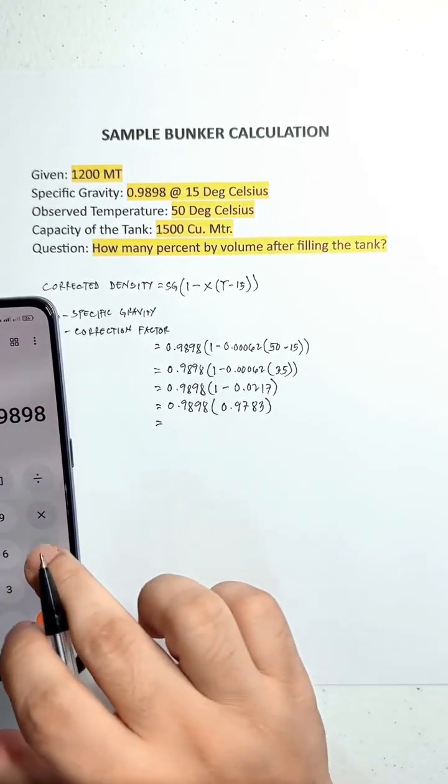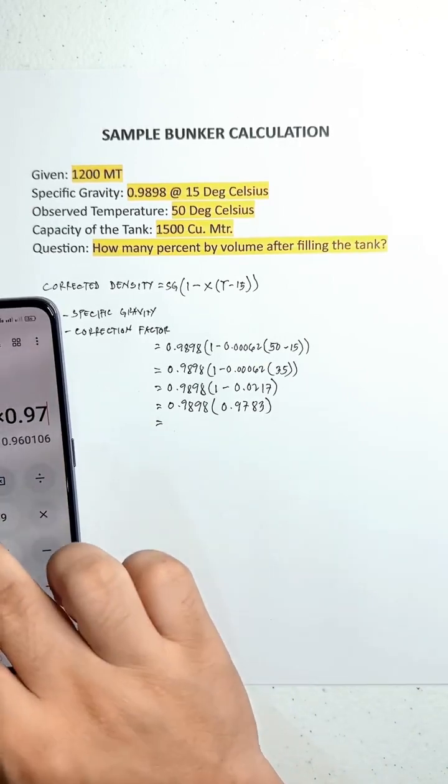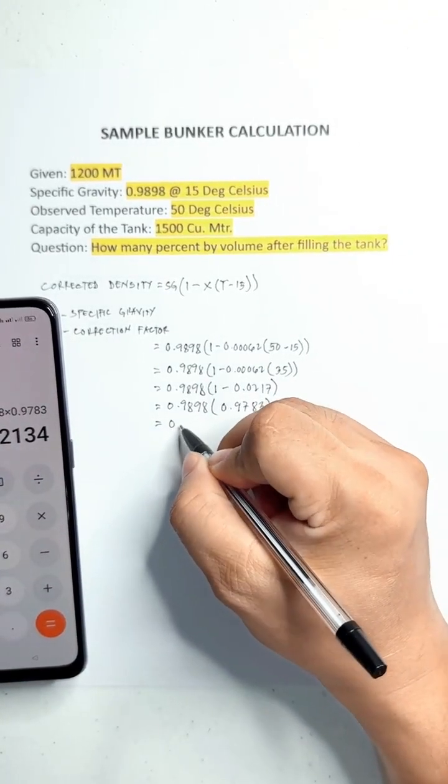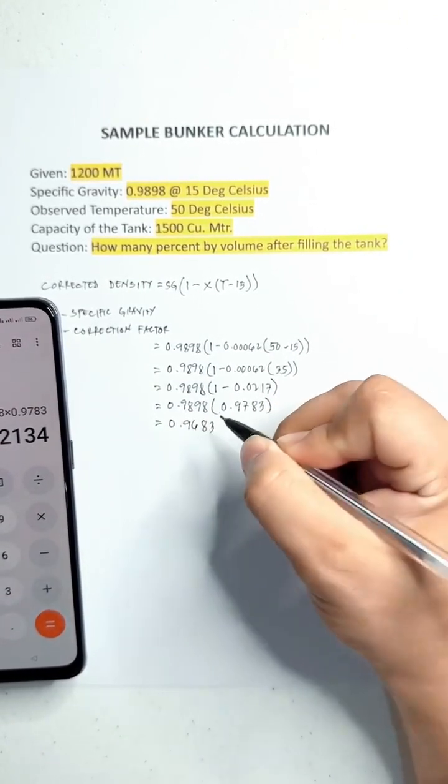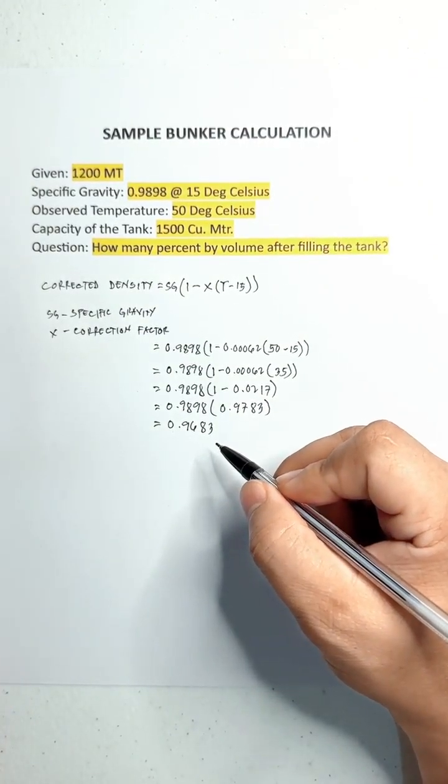0.9898 times 0.9783 equals 0.9683. This is the corrected density.